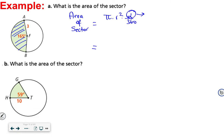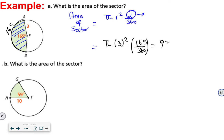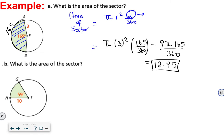The radius of the circle is 3, so we have pi times 3 squared times the measure of arc R, which is 165 degrees. That gives us 165 over 360. Calculating: 3 squared is 9, so pi times 9 times 165 over 360, which equals 165 times 9 times pi over 360, approximately equal to 12.95. So this is the area of the sector.